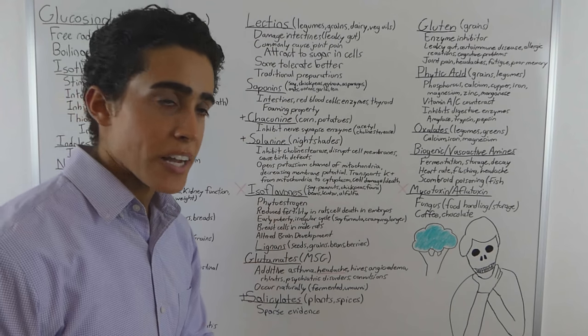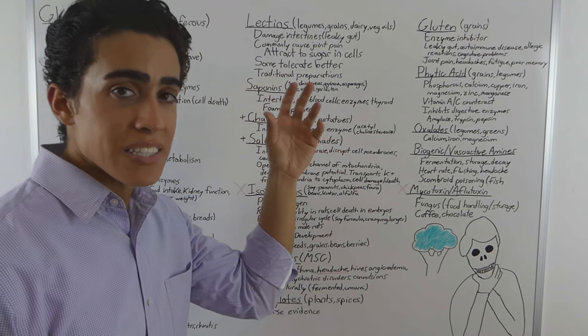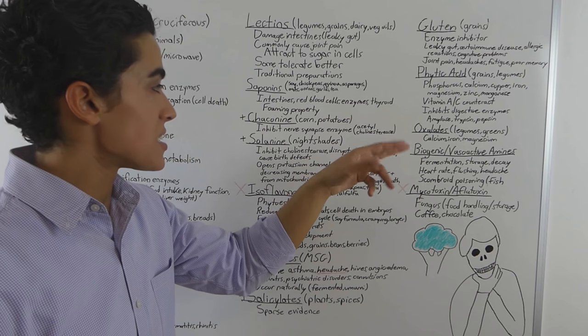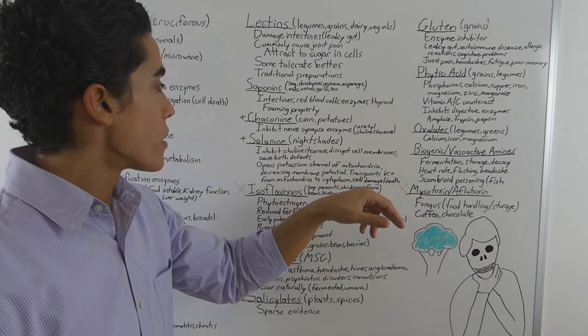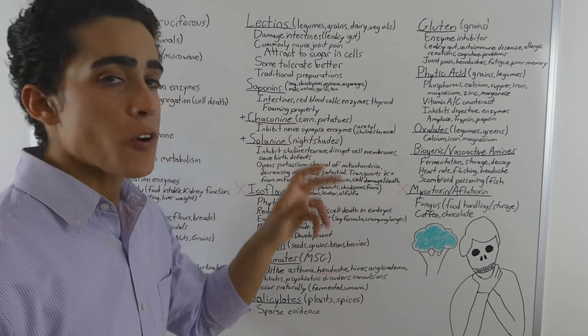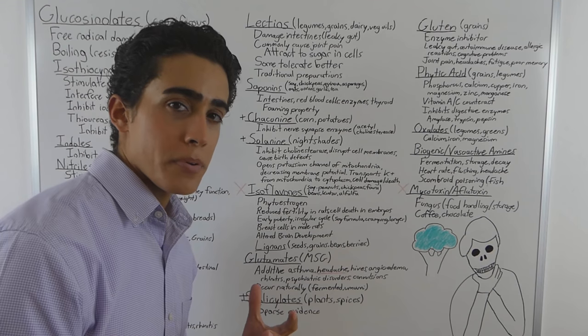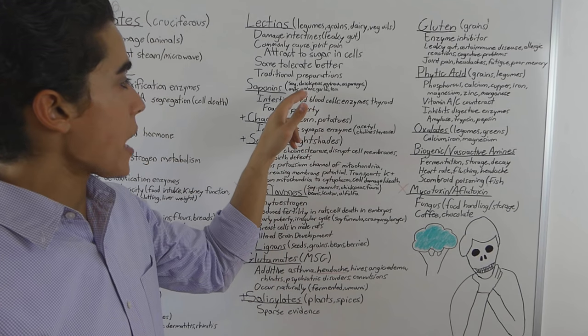Saponins are very similar to lectins in that they damage the intestinal lining. They also damage red blood cells, enzymes, inhibit enzymes. Thyroid function as well. And they have a foaming property. When saponins enter the body, they foam up. And that's part of what causes the cell damage.